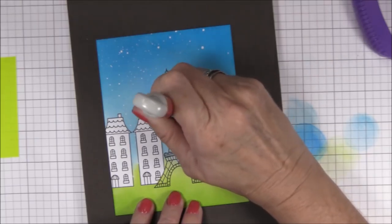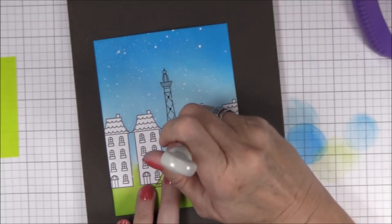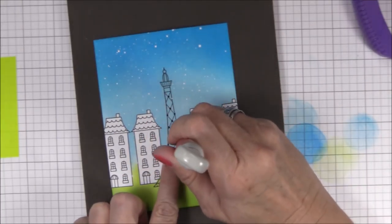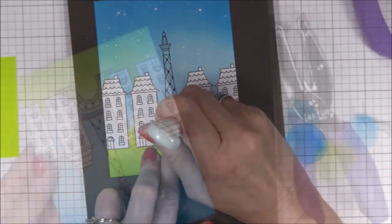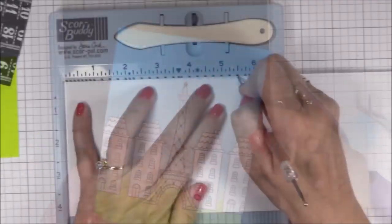Now I'm using my piercing tool and a foam mat to poke small holes on the Eiffel Tower. I poke a hole where each of the grid lines cross, from the top of the Eiffel Tower to the bottom. And then I use a 1 1/8 inch hand punch that I had in my stash to punch out the light at the top of the tower.